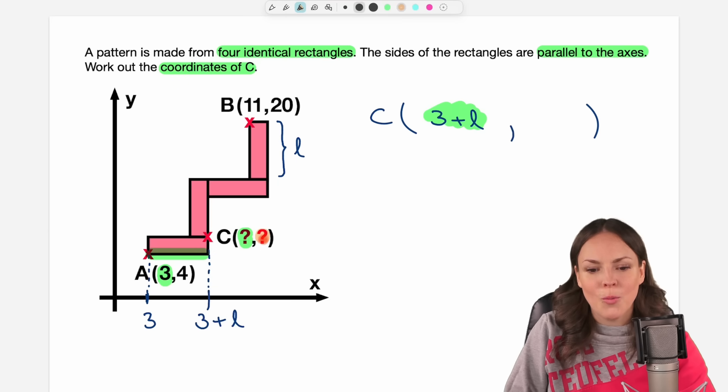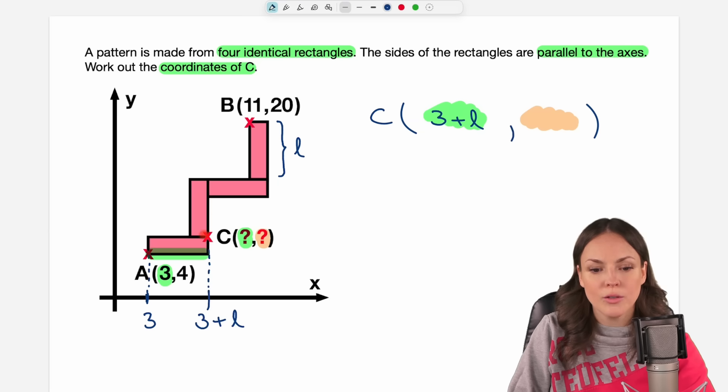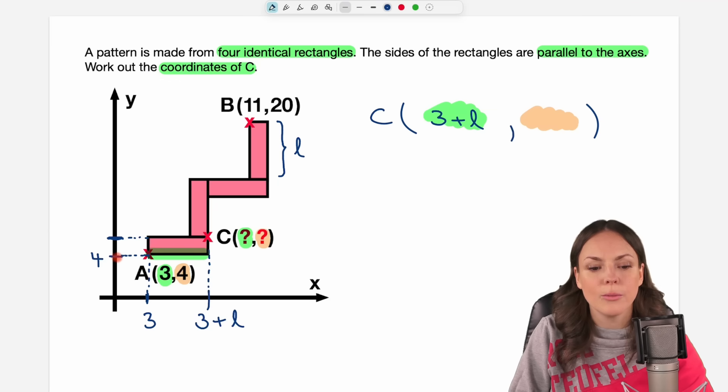What about the y-coordinate? So this time we go to the y-axis from this point here. This is what I need to know where I am here. We can start from point A again because at this point on the y-axis, we know that we are at 4. So here we are at 4. And how can we get from here to here?